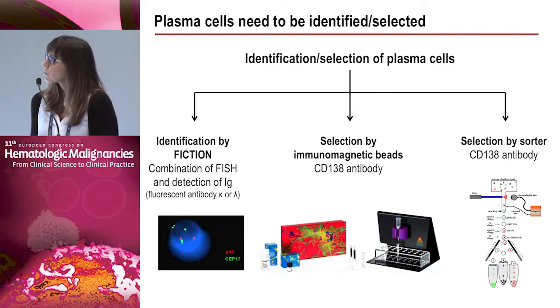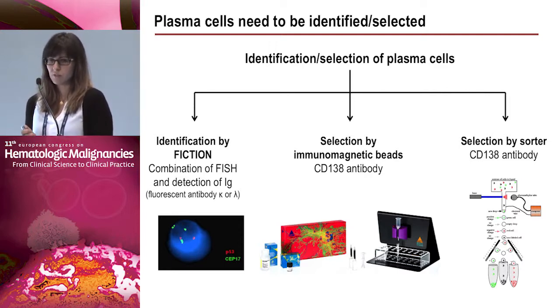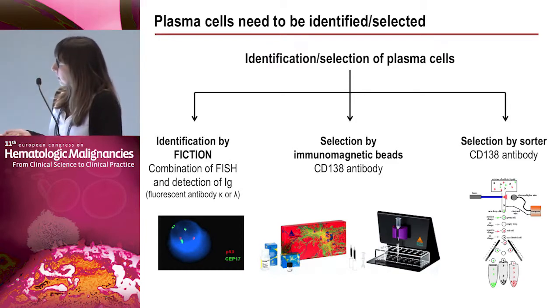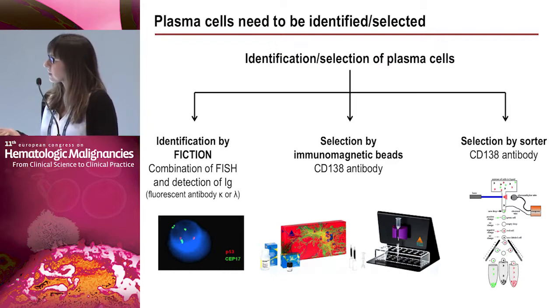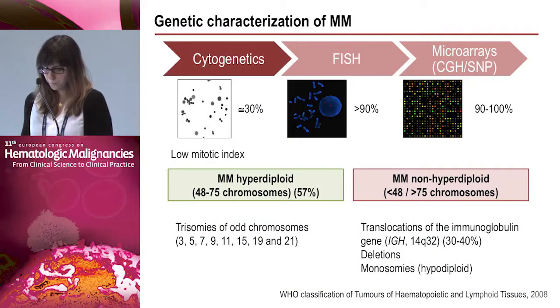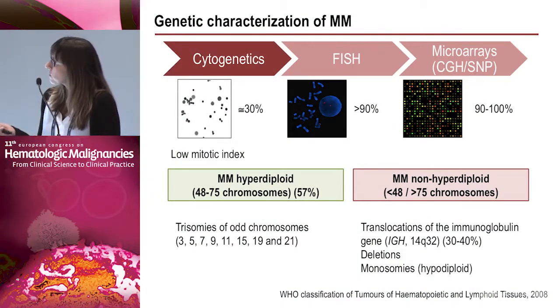To study multiple myeloma it is important to select the tumoral cell, which is the plasma cell. We can perform a cIg-FISH assay, which allows identification using monoclonal antibodies combined with the FISH technique to identify and study plasma cells. Another option is to select plasma cells using immunomagnetic beads with a CD138 antibody, or to select by cell sorter with this antibody.